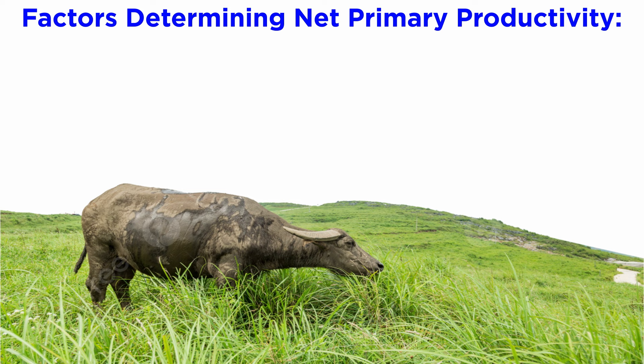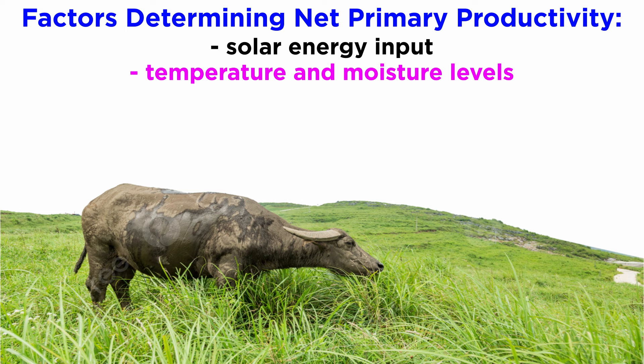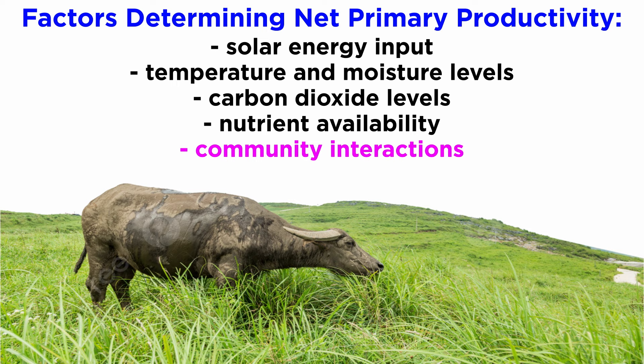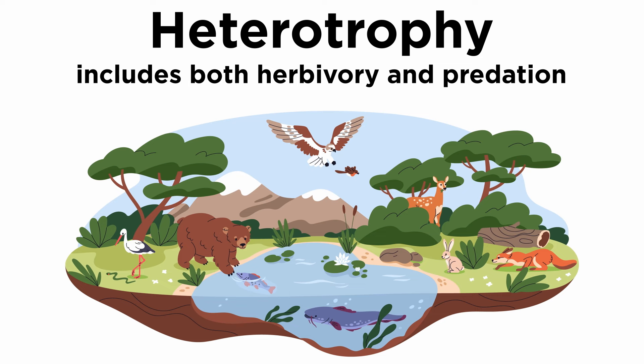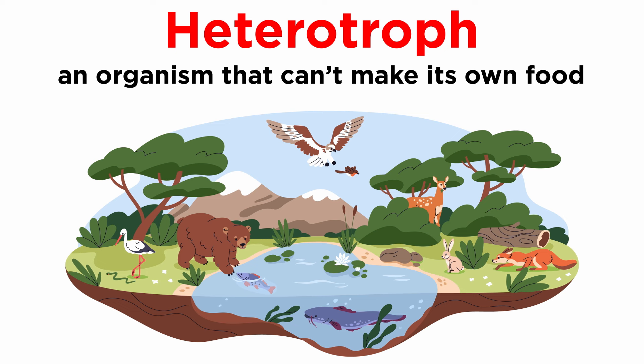These factors include solar energy input, temperature and moisture levels, carbon dioxide levels, nutrient availability, and community interactions like grazing by herbivores. Next, let's move on to heterotrophy, including herbivory and predation. Once again, a heterotroph is an organism that cannot produce its own food, instead taking nutrition from other sources of organic carbon.